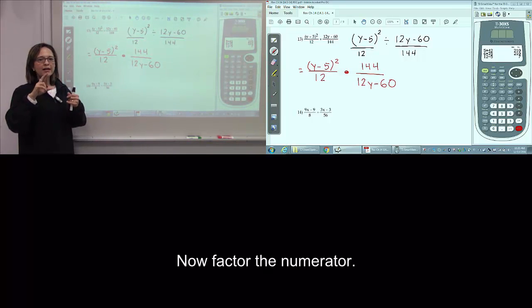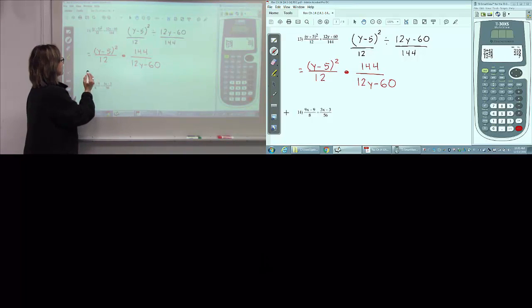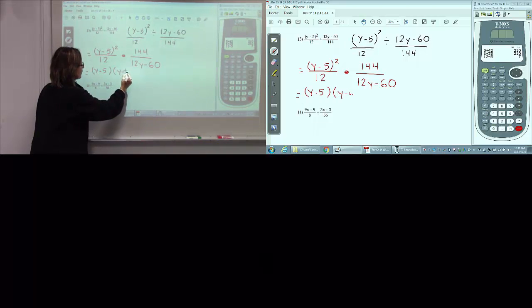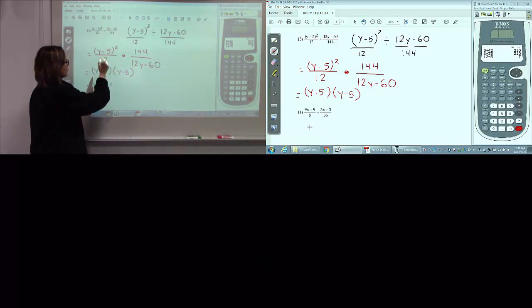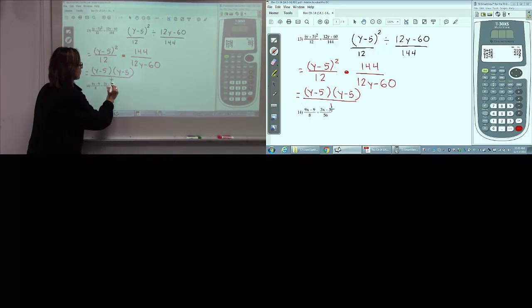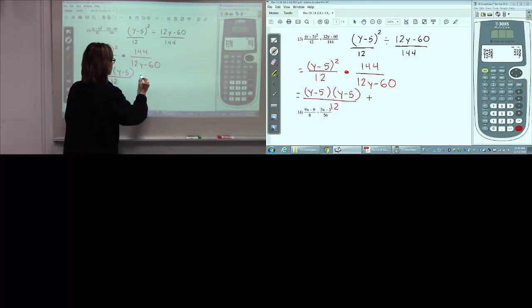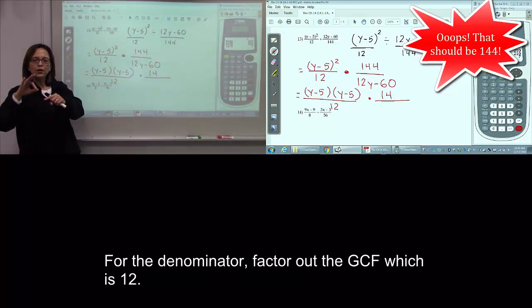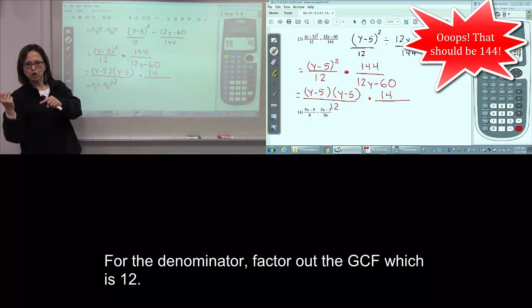Now, factor the numerator. For the denominator, factor out greatest common factor, 12.